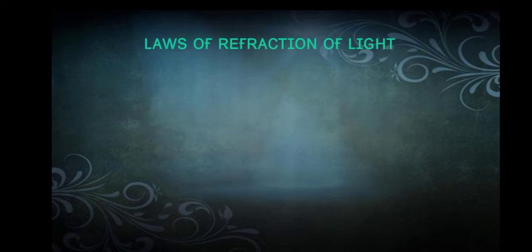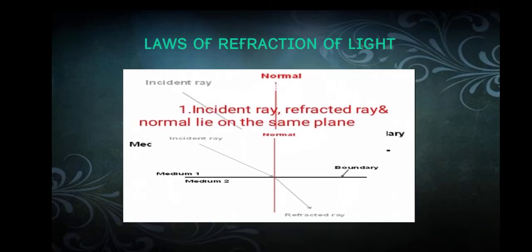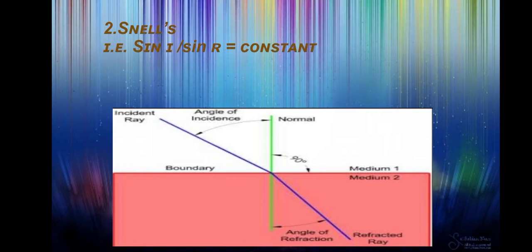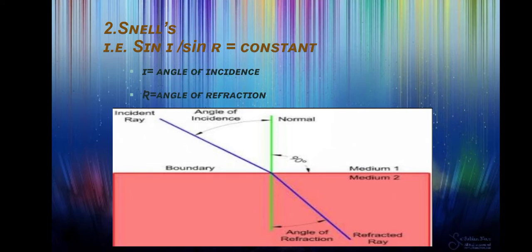Laws of Refraction of Light. First: the incident ray, refracted ray, and normal lie on the same plane. Second — Snell's Law: sine I upon sine R is equal to a constant, where I stands for angle of incidence and R stands for angle of refraction.